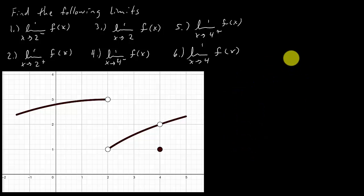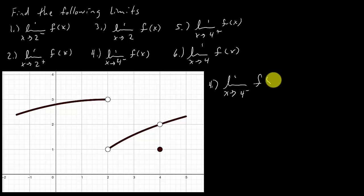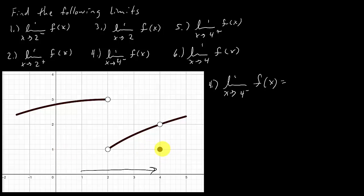Let's look at number 4: the limit as x approaches 4 from the left of f of x. So we're coming in to 4 from the left-hand side, and as we do, the y value is approaching 2. Be careful — it's not the value at x = 4 itself, because remember, we're not ever going to equal 4, we're just approaching it. So as we're approaching 4 from the left, the y value is approaching 2, and so this equals 2.